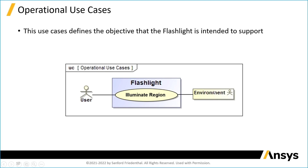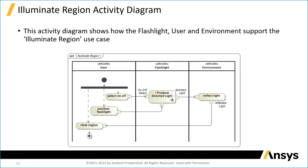This is considered a black box view — one of the black box views of the system — where we're not showing the internal details of the flashlight. We're strictly showing the flashlight and some of its relationships to external elements, in this case the user and the environment. In this next diagram, called an activity diagram, it shows how we are going to realize the objective shown in the use case.